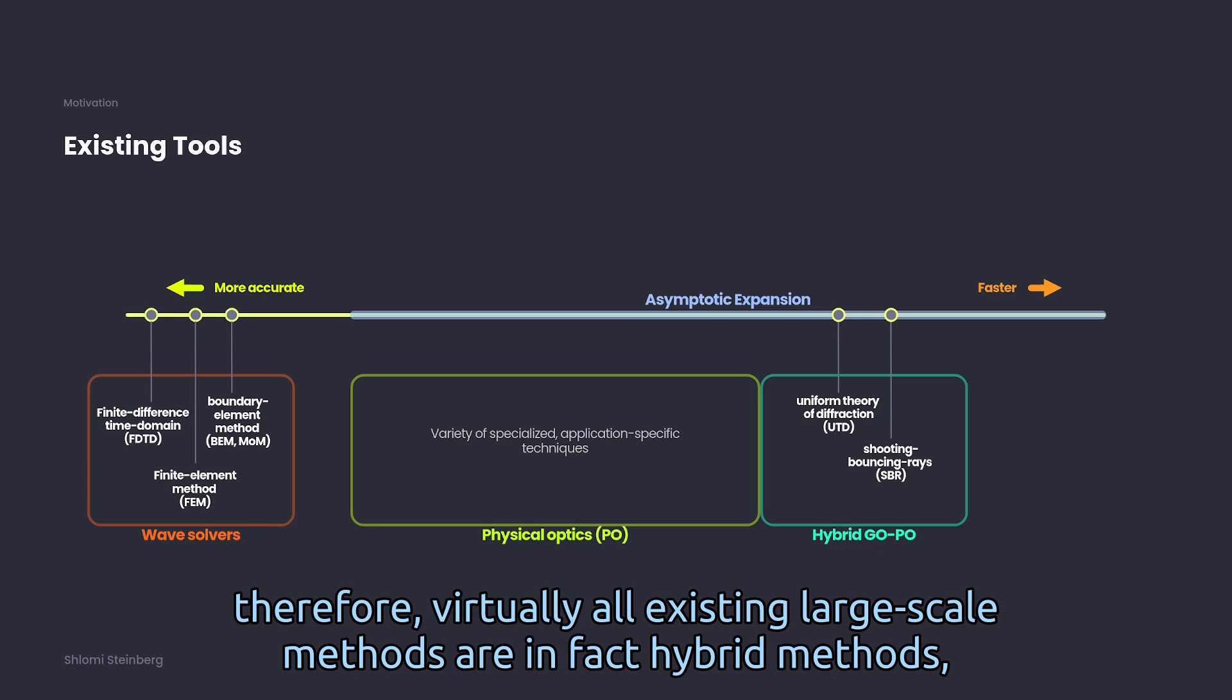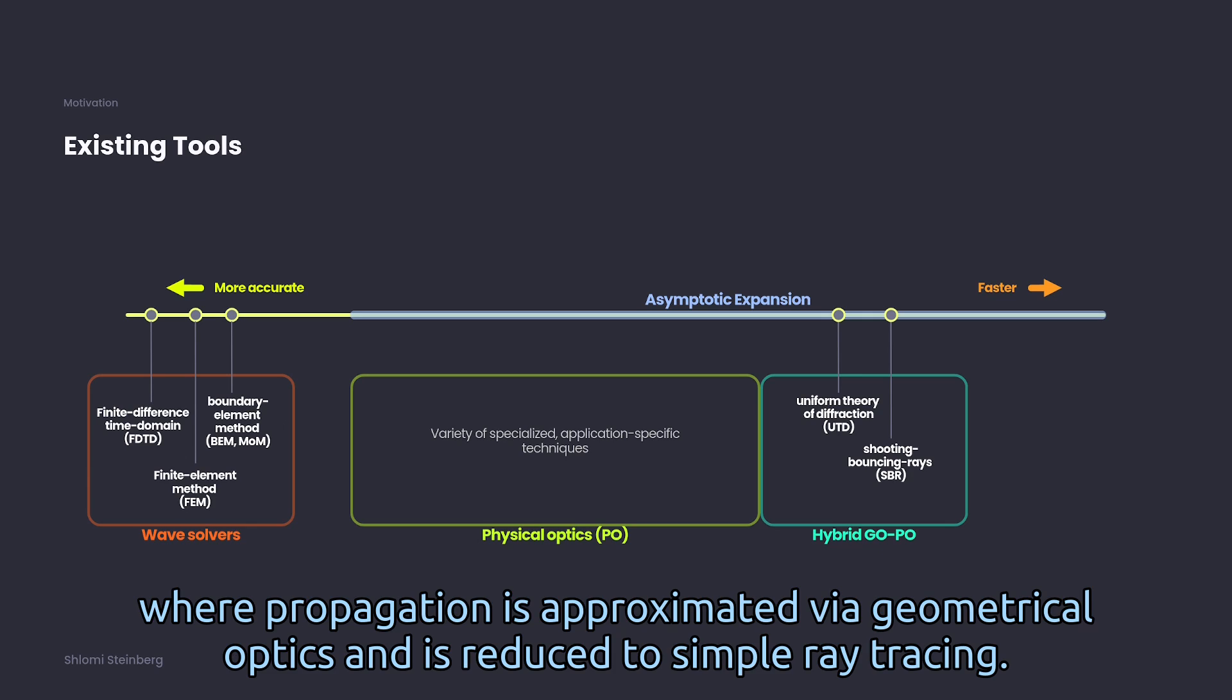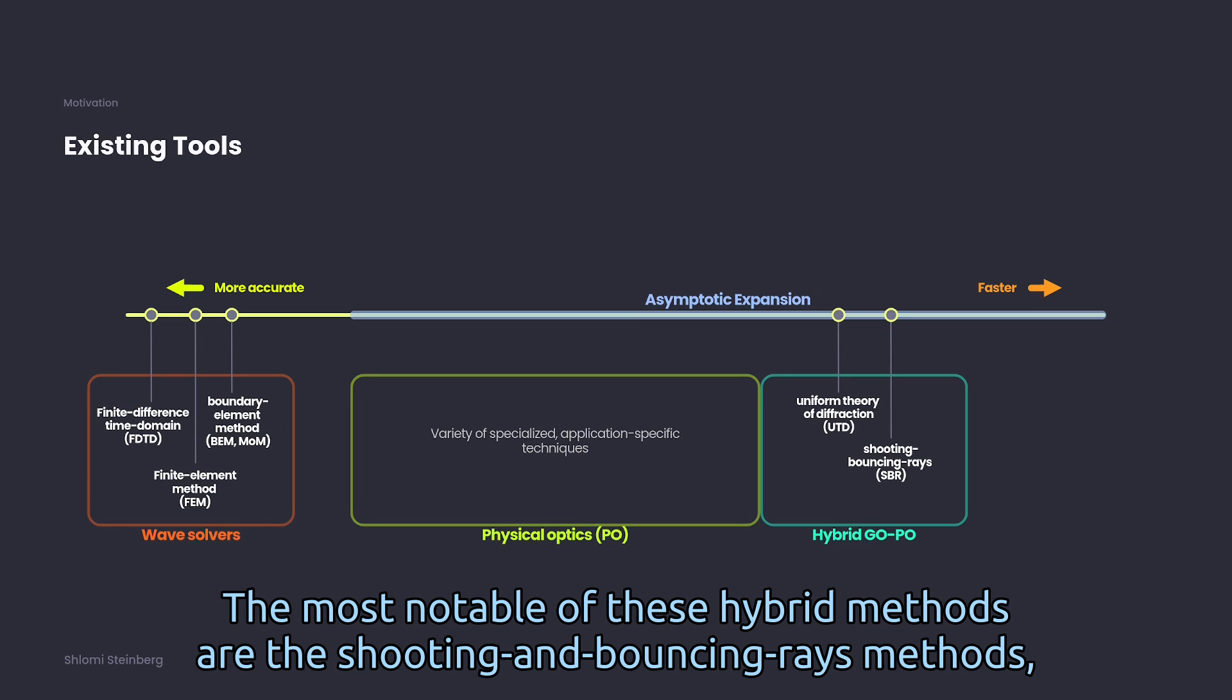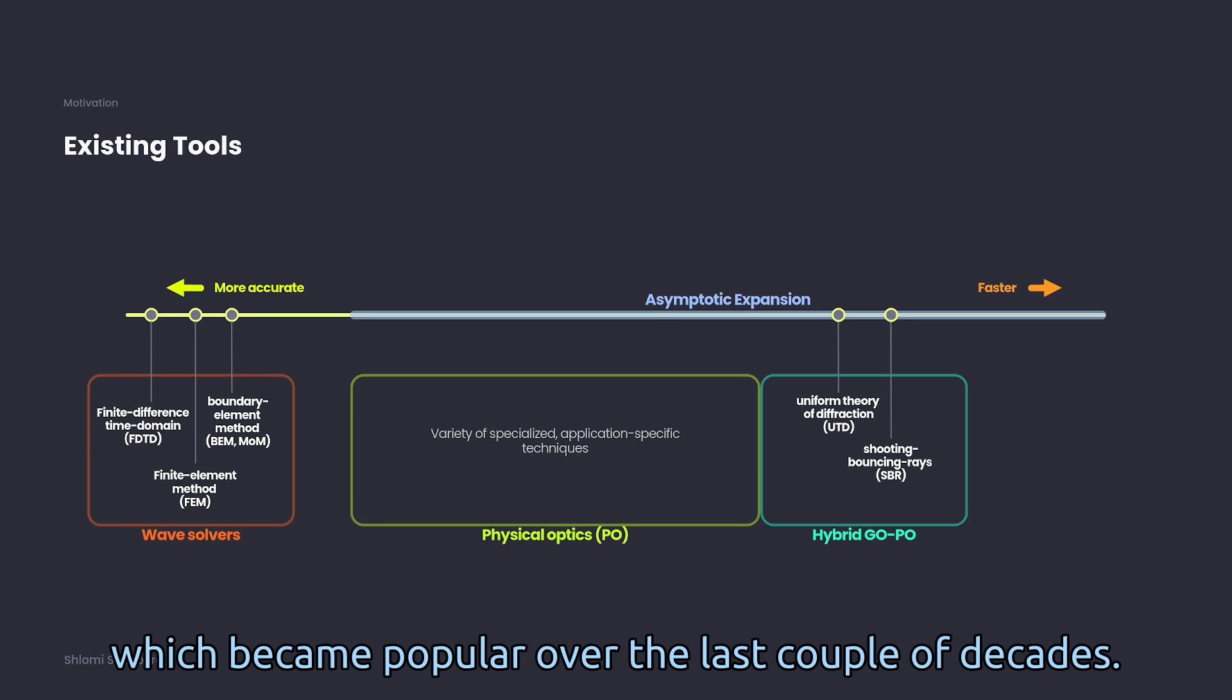Therefore, virtually all existing large-scale methods are in fact hybrid methods, where propagation is approximated via geometrical optics and is reduced to simple ray tracing. The most notable of these hybrid methods are the shooting and bouncing rays methods, which became popular over the last couple of decades.